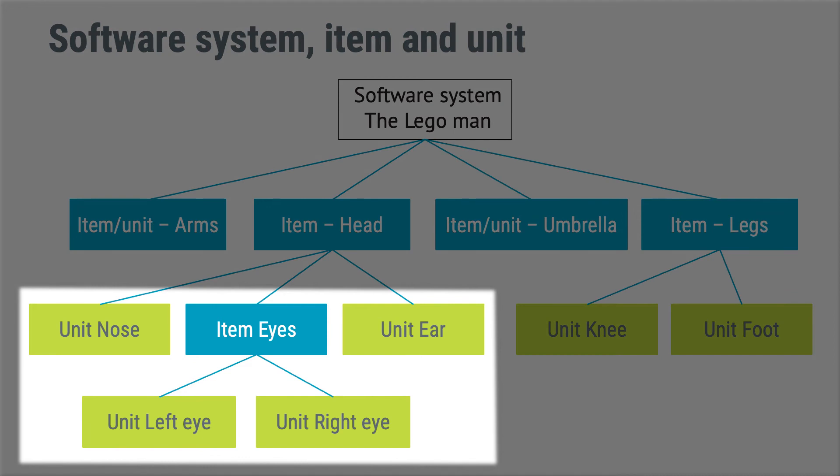Before we say goodbye to Mr. Lego, I want to highlight that you can mix items and units on the same level. Also, a widespread misunderstanding is that the term unit is equivalent to unit in unit testing, commonly used by software developers to test software. It is not. A software unit as defined by IEC 62304 can be tested with the help of multiple unit tests, and you can also verify items with the help of unit testing.